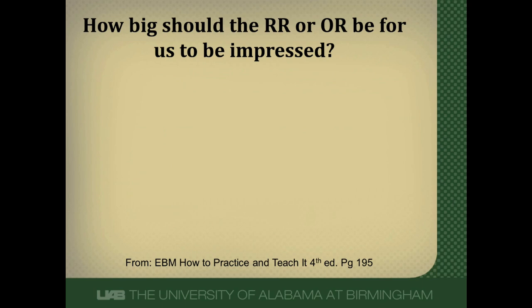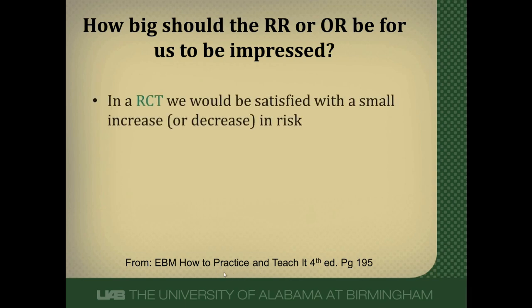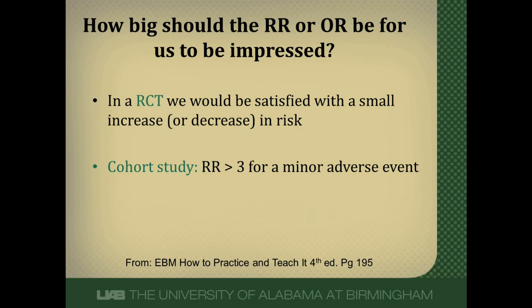When should you be impressed by a relative risk or odds ratio? In a randomized control trial — least prone to bias — fairly small increases or decreases are satisfying. In a cohort study, the relative risk needs to be at least 3 or greater for minor adverse events. For a case control study, an odds ratio greater than 4 is the suggested threshold, since case control studies are at greater risk of bias than cohort studies, which are at greater risk than randomized control trials. The bigger the number, the more impressed you should be.